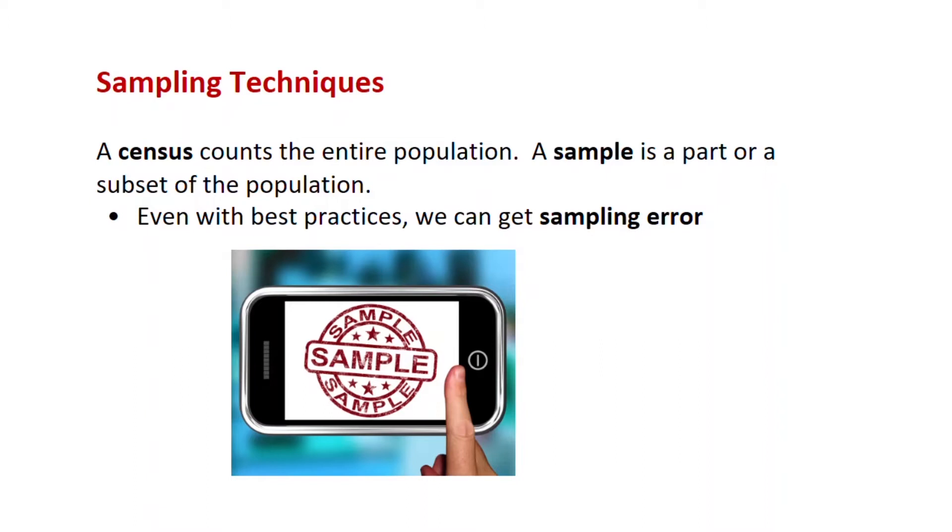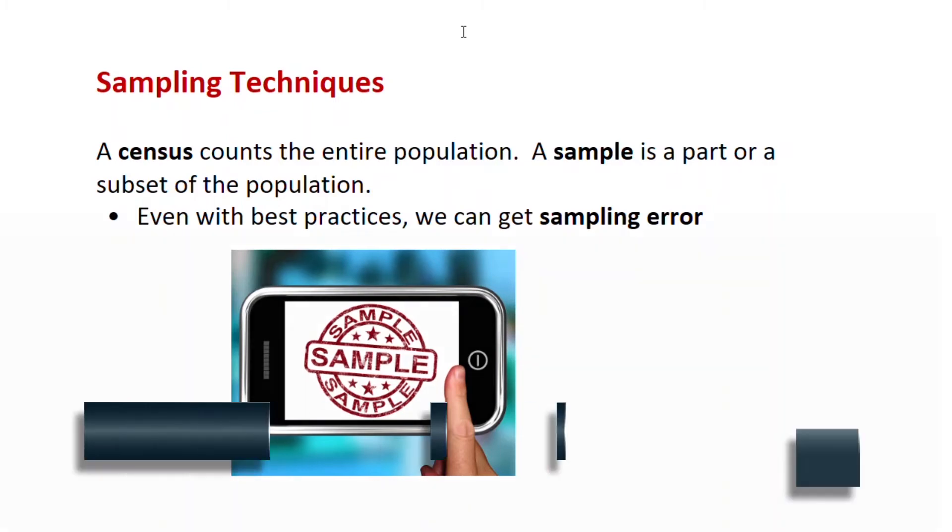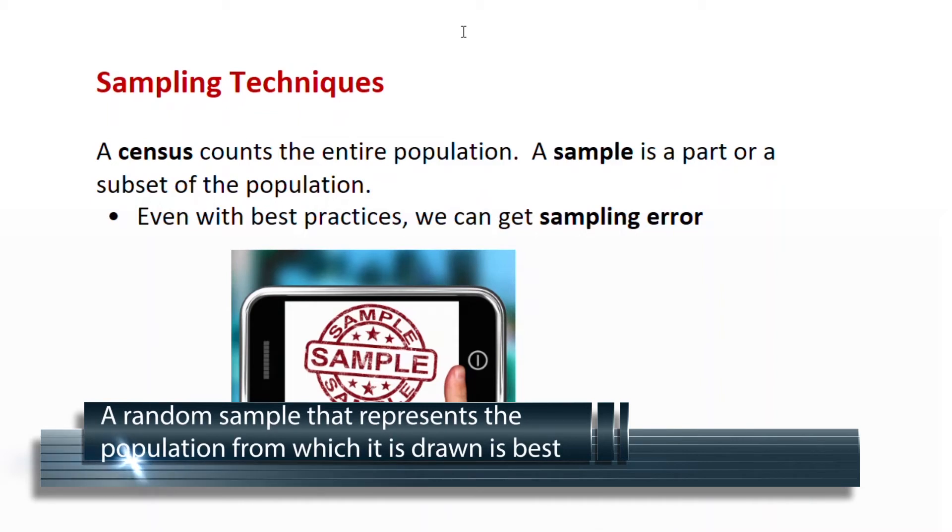Remember that a census is a count of an entire population. You can imagine that's pretty expensive and often very difficult to perform, actually impossible if you think about it most of the time for a large population, because people die and are being born all the time. So what we normally do is we take a sample of a large population, and that's a subset of the population.